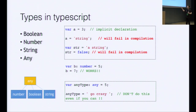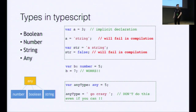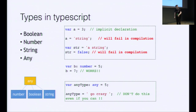The bottom scenario is one I never want to see from any of you. In this case, we're telling it to be any, which basically means we can reassign it with any kind of type we want. So don't do this even if you can.